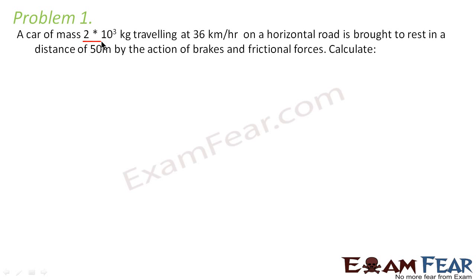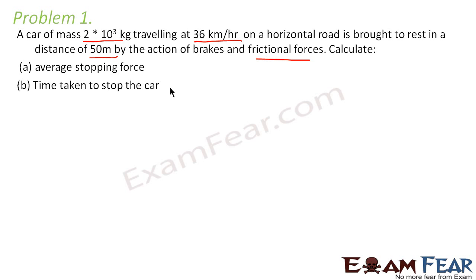A car of mass 2 × 10³ kg traveling at 36 km per hour on a horizontal road is brought to rest in a distance of 50 meters by the action of brakes and frictional forces. Calculate the average stopping force and the time taken to stop the car. Let us first understand the question. We have a car whose mass is 2 × 10³ kg, moving with a velocity of 36 km per hour.